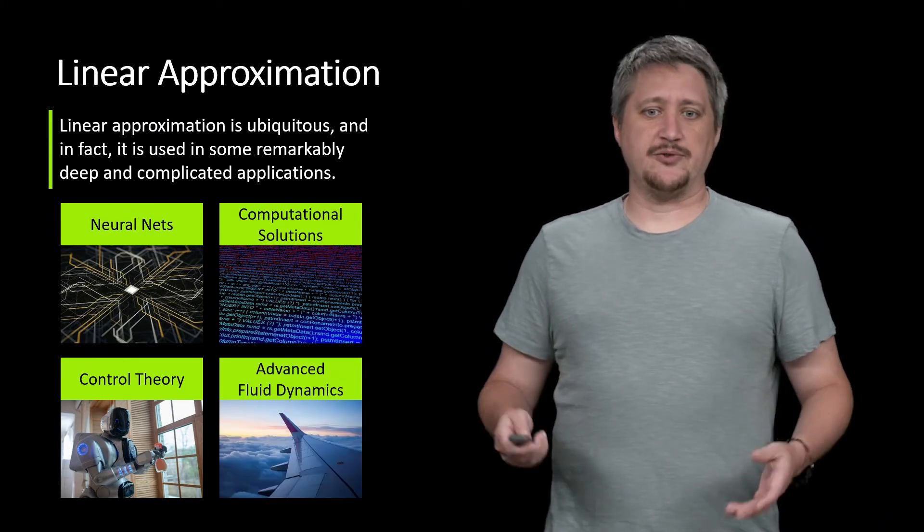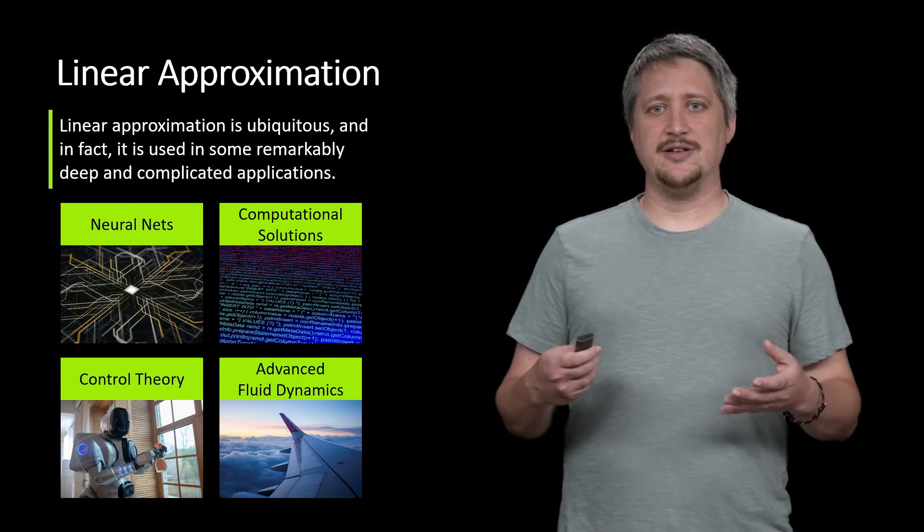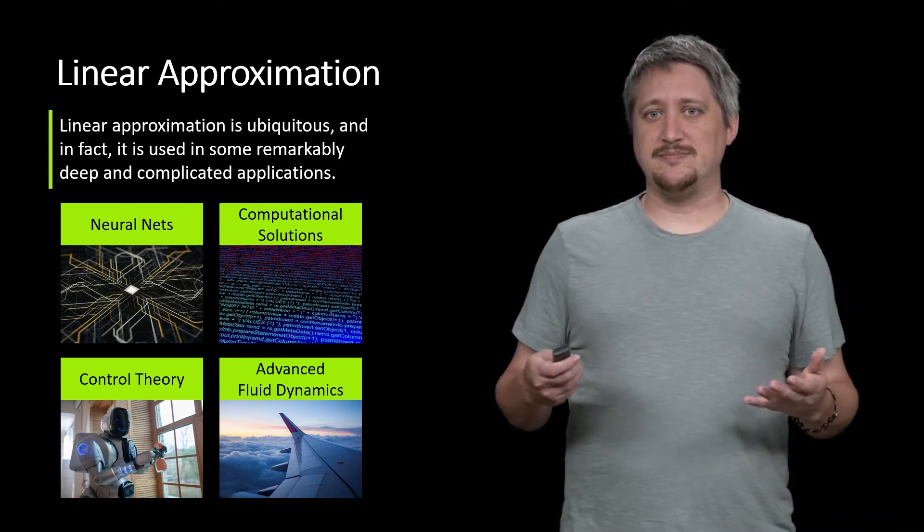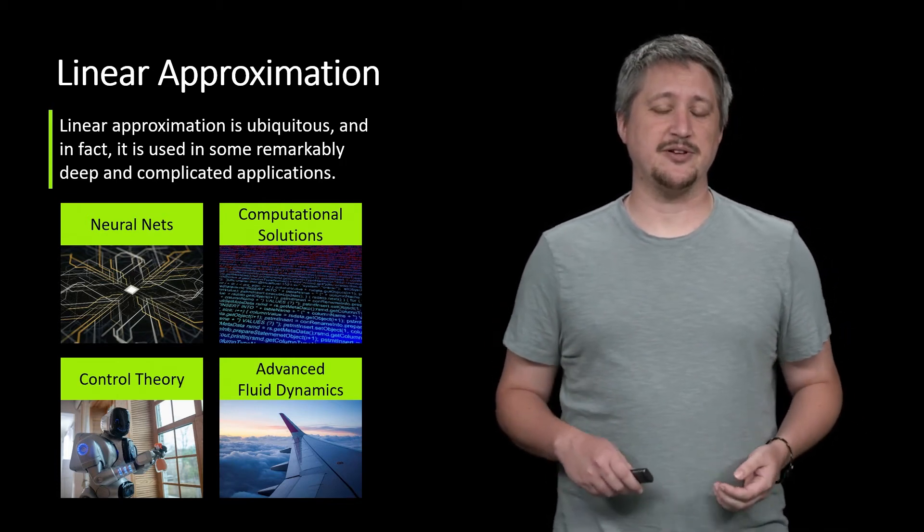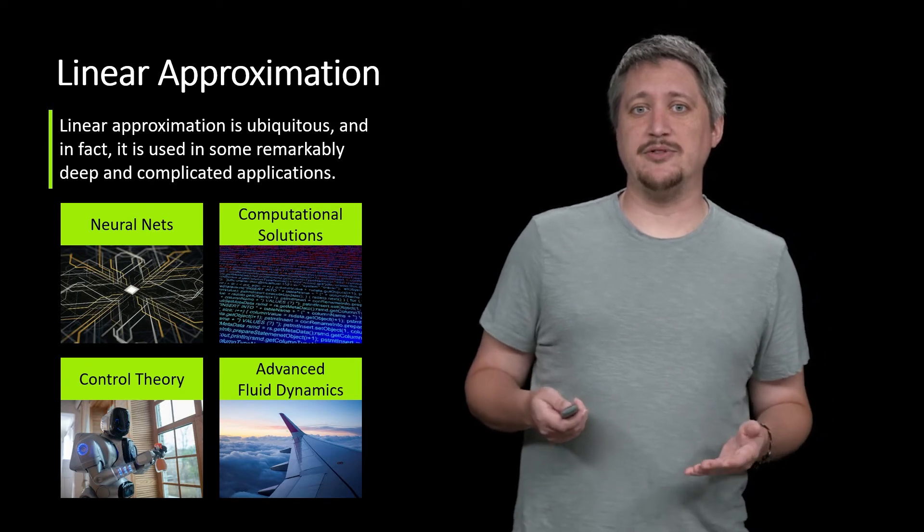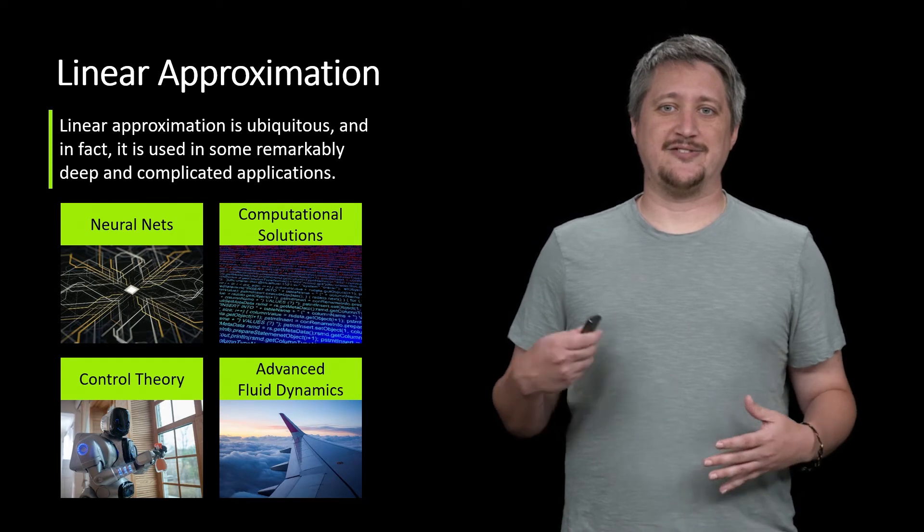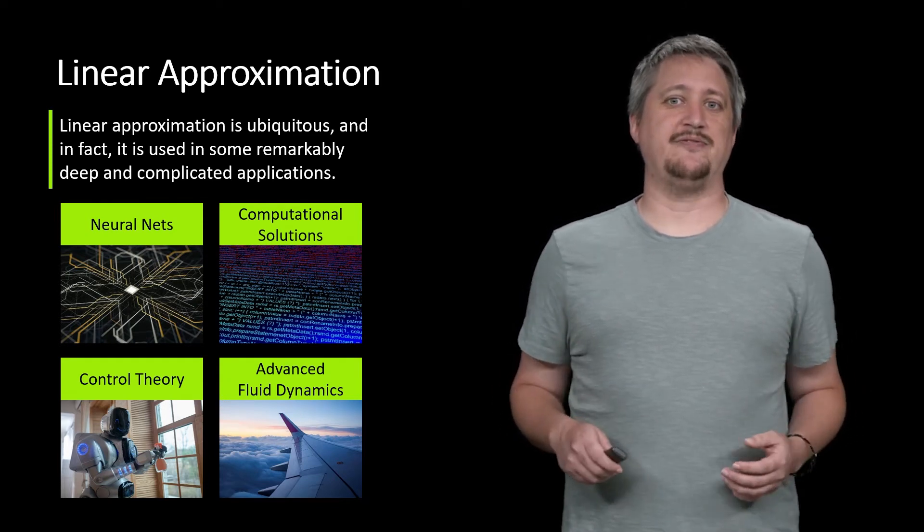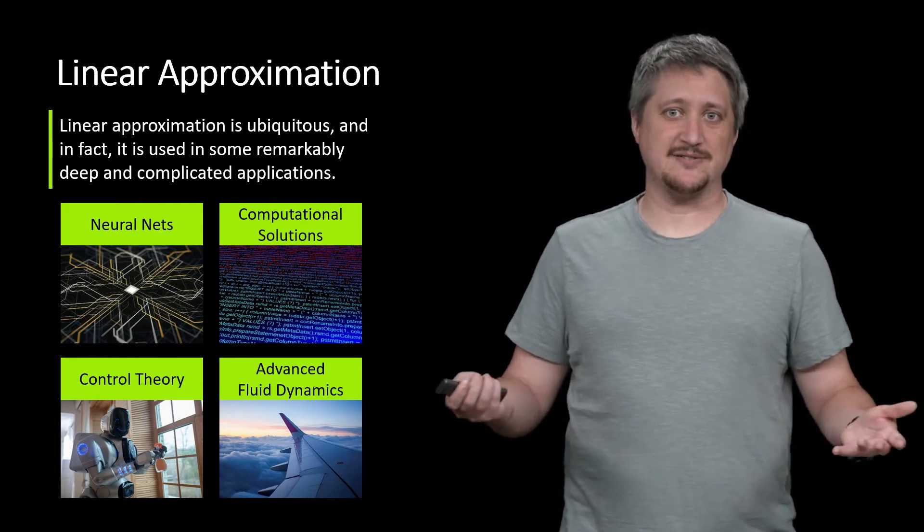As a final example, fluid dynamics. One of the millennium prizes, which are these math questions that have million dollar bounties, is understanding how turbulence works. And right now, the best we can do is using a linear approximation of how turbulence works. That's what we use for the math for understanding how to make planes stay in the sky and stuff like that.